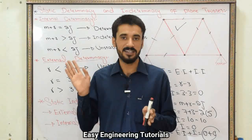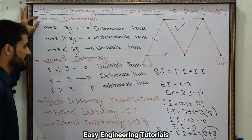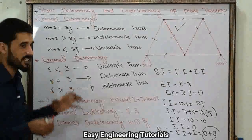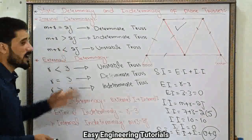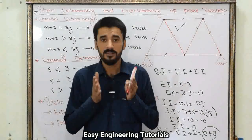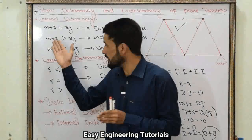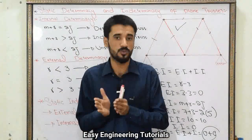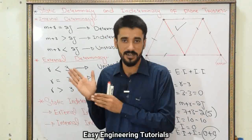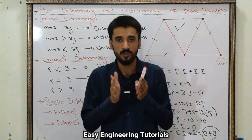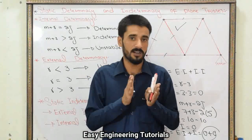Now, Static Determinacy and Indeterminacy of a Plane Truss. The first type is Internal Indeterminacy and the second is External Indeterminacy. For internal determinacy: if M plus R is equal to 2J, then the truss is internally determinate; if M plus R is greater than 2J, it is internally indeterminate; and if M plus R is less than 2J, the truss is internally unstable.